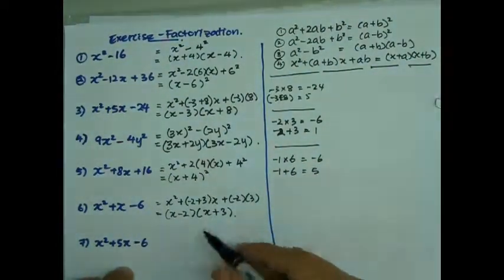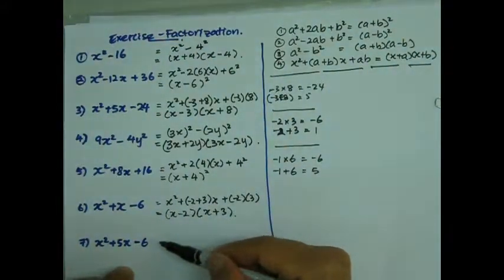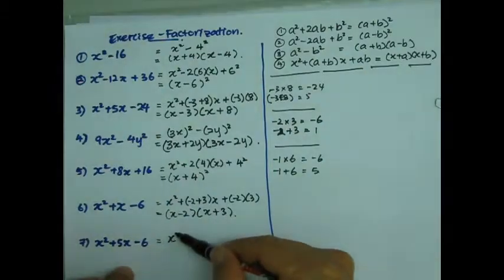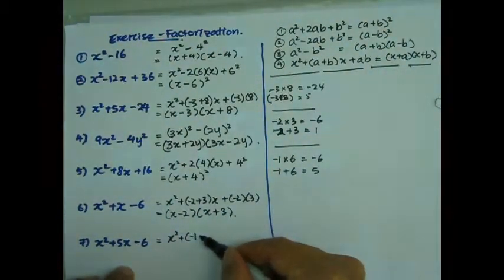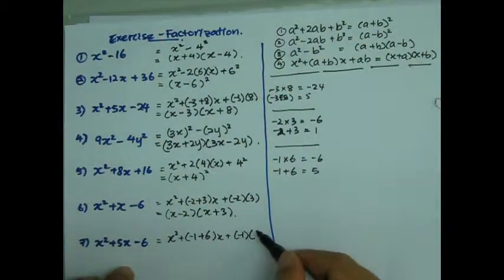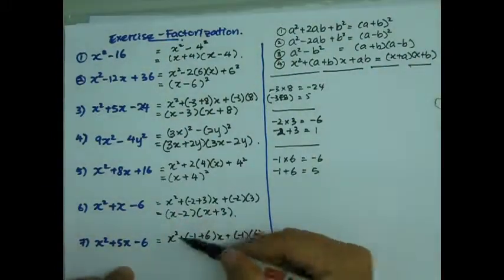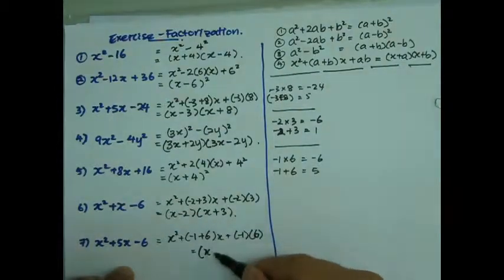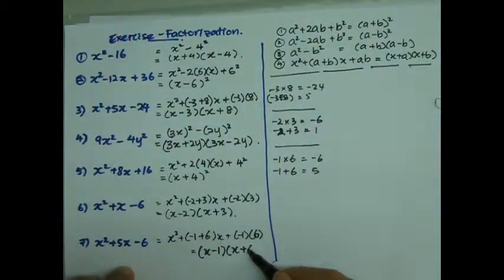So I'm going to rewrite this as x squared plus negative 1 times 6. This is equal to x minus 1 times x plus 6.